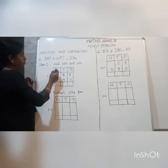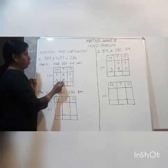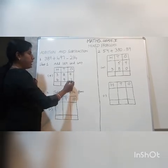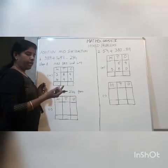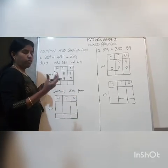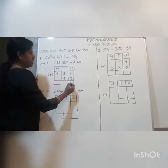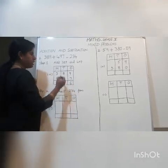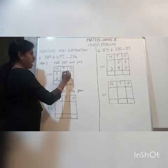So the first one is 389 plus 497. Starting with the ones place: 9 plus 7. Counting up: 9, 10, 11, 12, 13, 14, 15, 16. So 16 — we write 6 here and carry over 1.